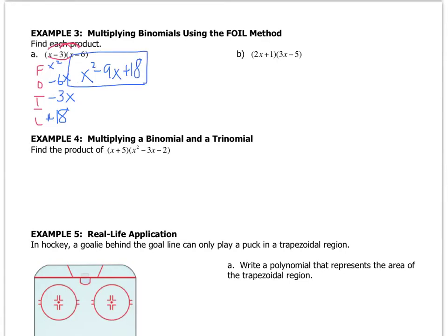If you want to try example B on your own, go for it. I'm going to write down FOIL so I remember what to do. The two first terms will be 2x times 3x, and that gives me 6x squared. Outer is going to be 2x times negative 5, that's negative 10x. Inner is going to be 1 times 3x, which is 3x. And then last is going to be 1 times negative 5, which is negative 5. So I combine and I get 6x squared minus 7x minus 5.